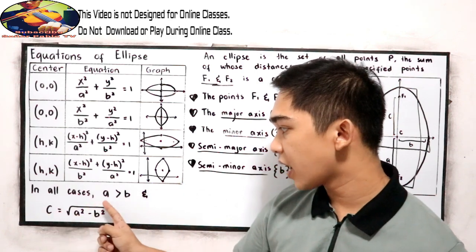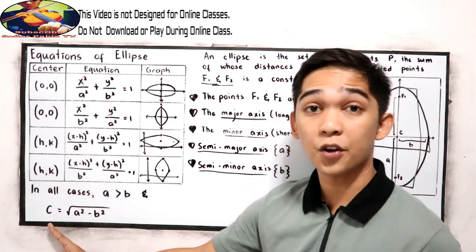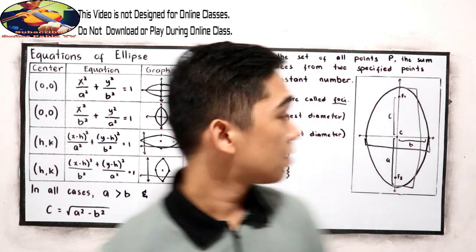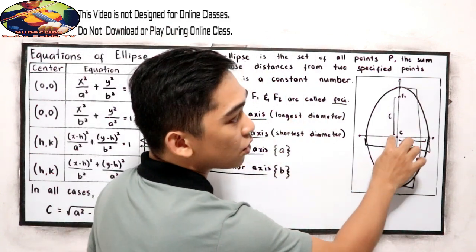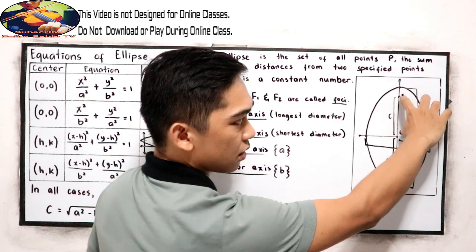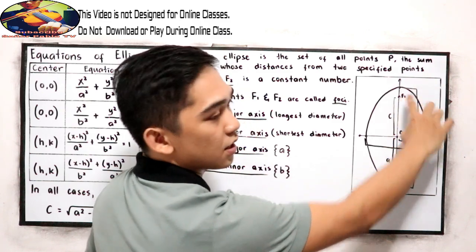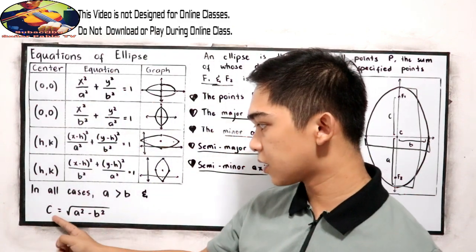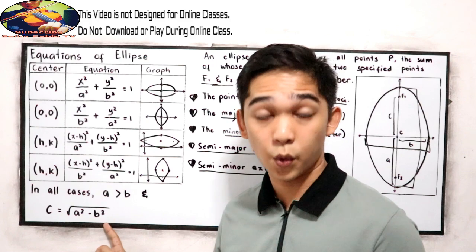Now, in all cases, A is greater than B. We have the formula for C. What is C? C is the distance from the center to the focus. And the formula is: C is equal to the square root of A squared minus B squared.